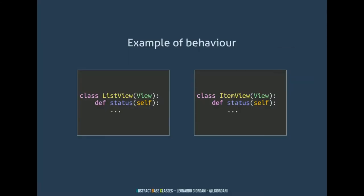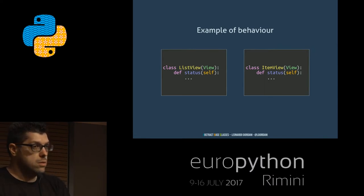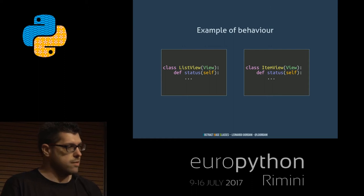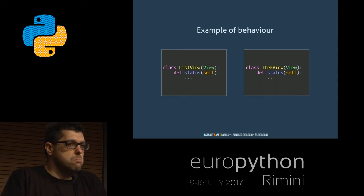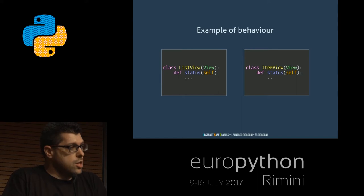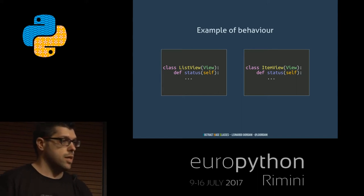This is an example of behavior. I have two classes, ListView and ItemView, sort of like Django views. They inherit from a parent class called View. The parent class doesn't define the status method — I implement it directly in ListView and ItemView. So there's no way for me to say that ListView and ItemView implement that function just by looking at inheritance. Those two classes behave in some way; they provide a method.